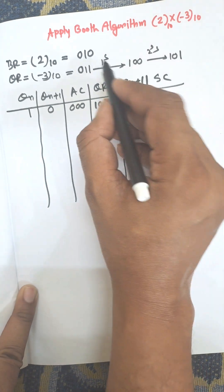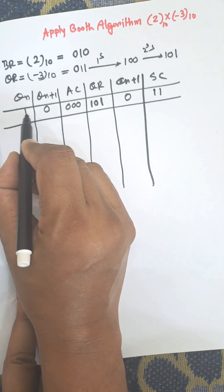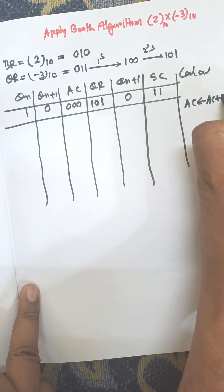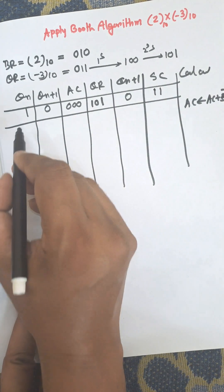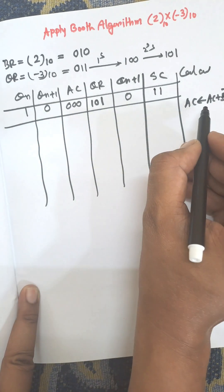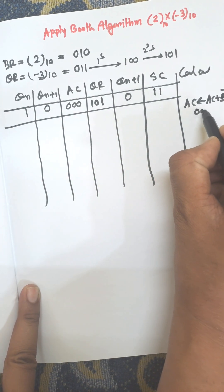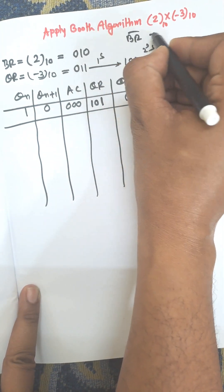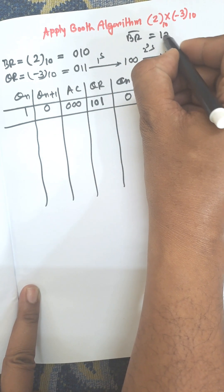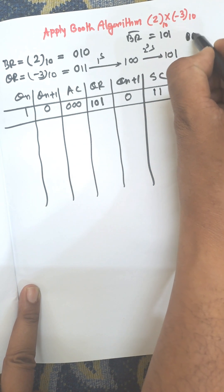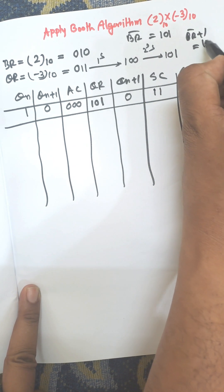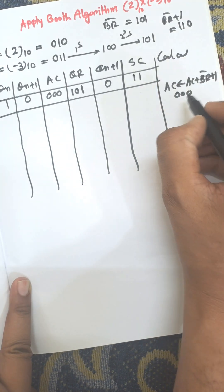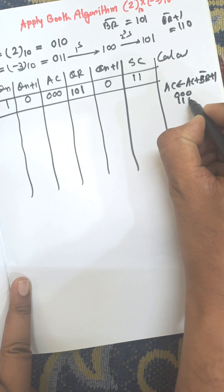AC is three bits, equal to zero. Since Qn is 1 and Qn+1 is 0, we perform AC plus BR-bar plus 1. AC is 0 0 0. BR-bar means the complement of BR, which is 1 0 1, so BR-bar plus 1 equals 1 1 0.